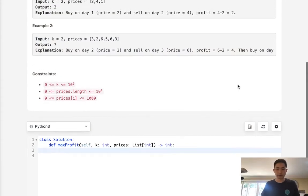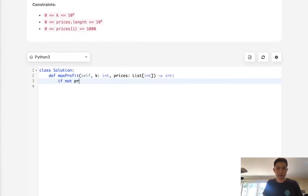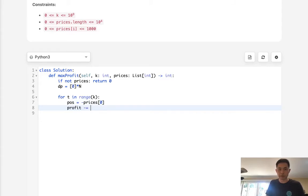First things first, if not prices, return 0. Now we want to initialize a DP array. That's just going to be 0 times n. And we're going to do this in a nested for loop. For t in range of k, first we'll initialize our position, which is going to be the negative prices[0] and our profit, which is always going to start with 0 here. Now we want to move through our list of prices. Length of one, and we can start with one, n.